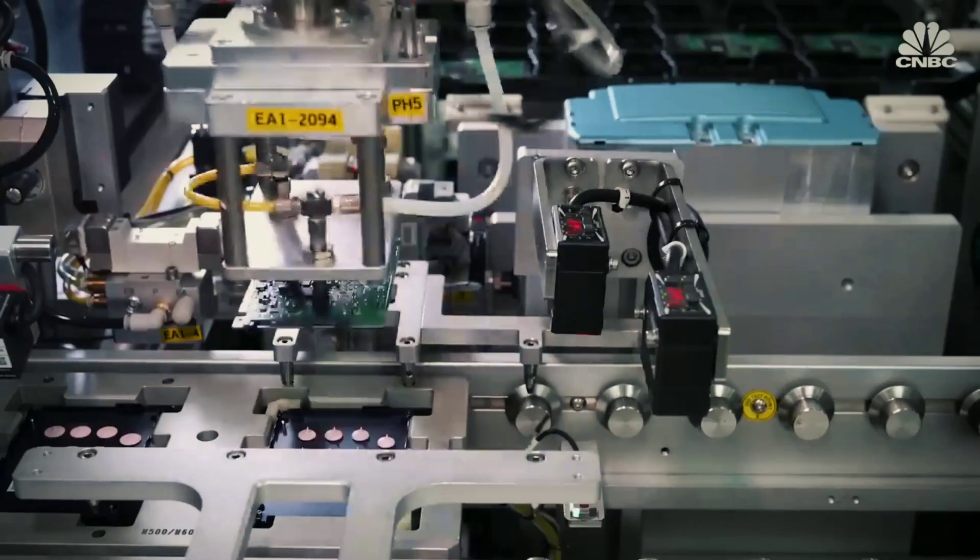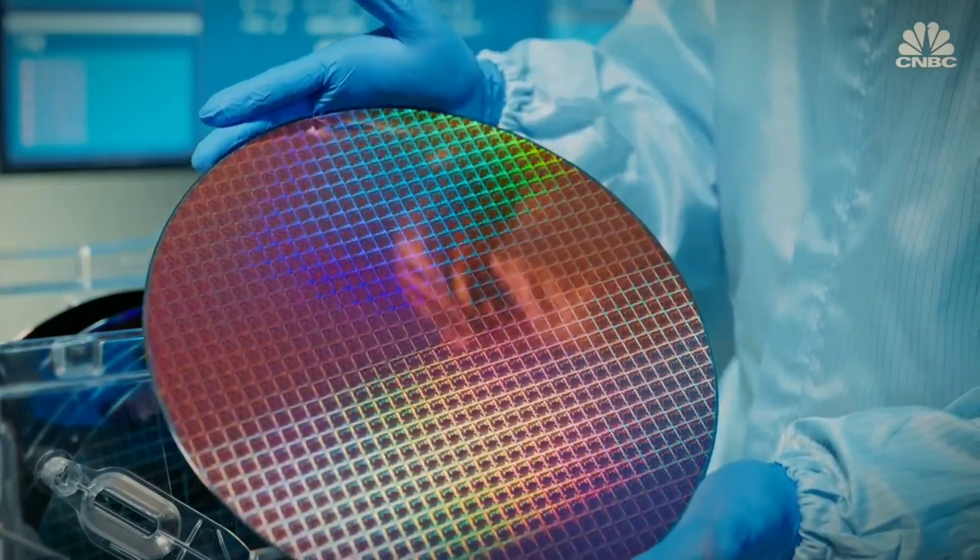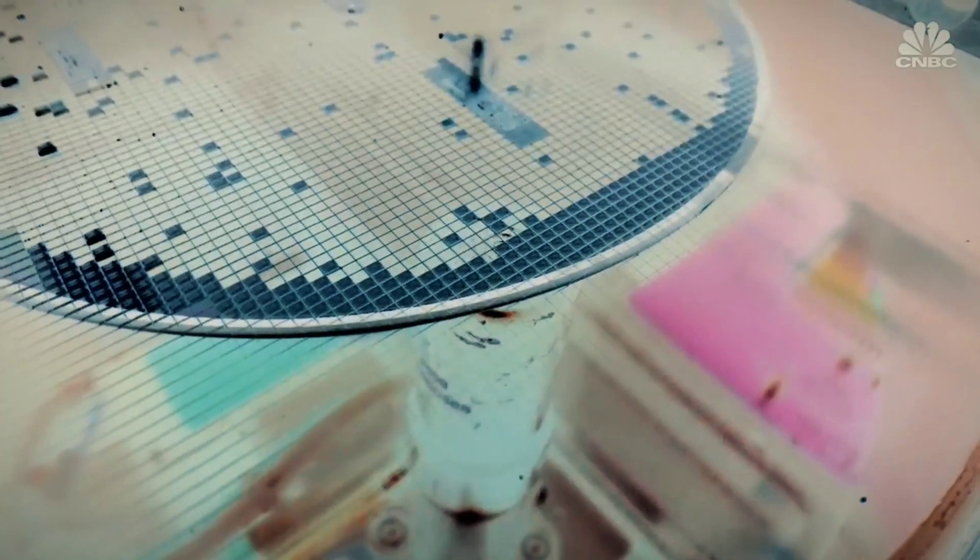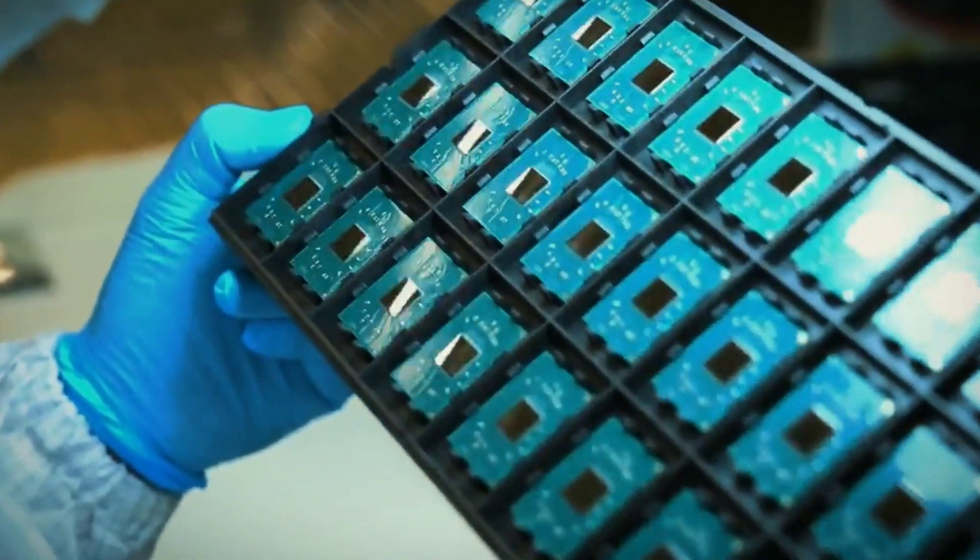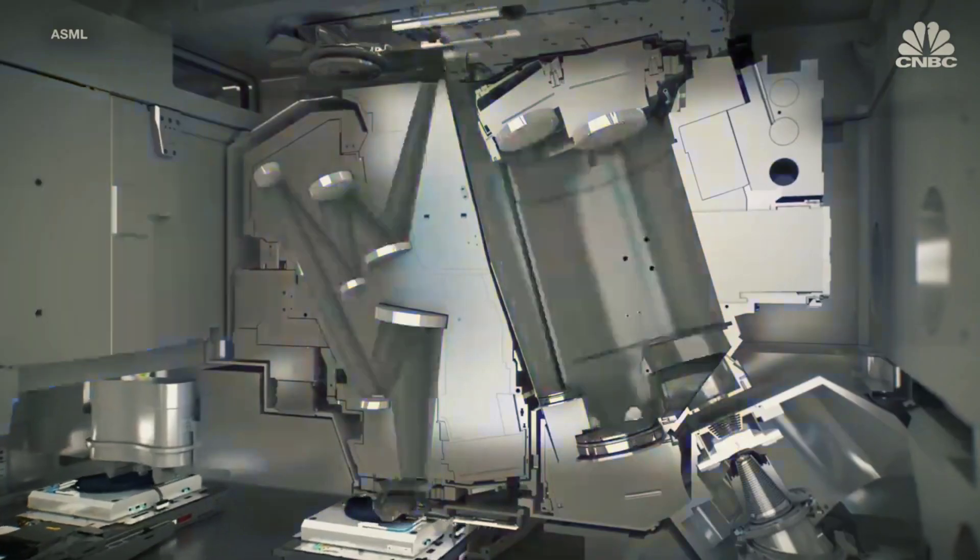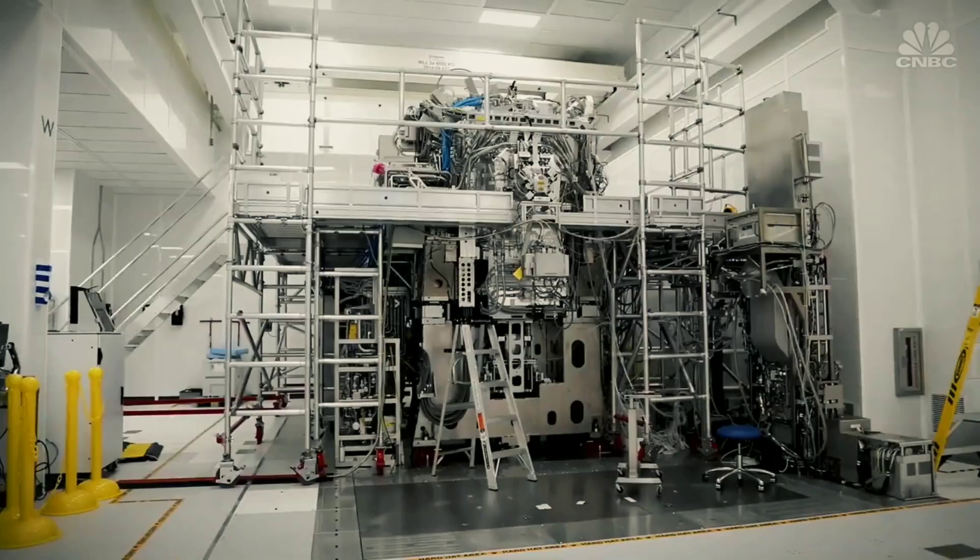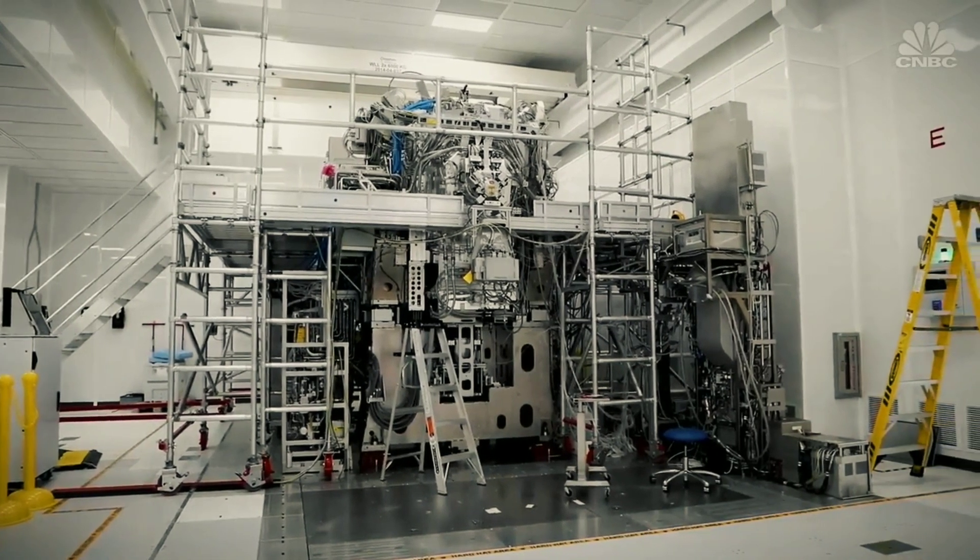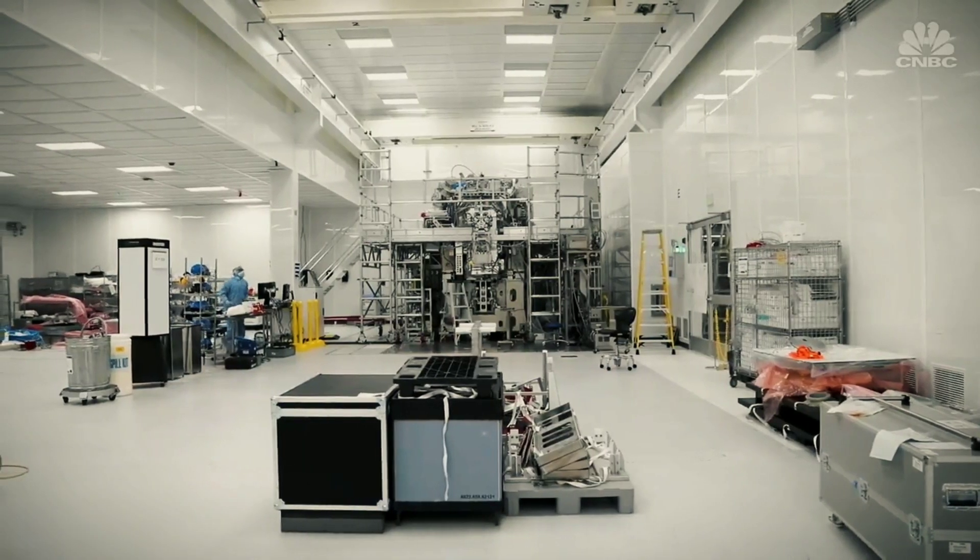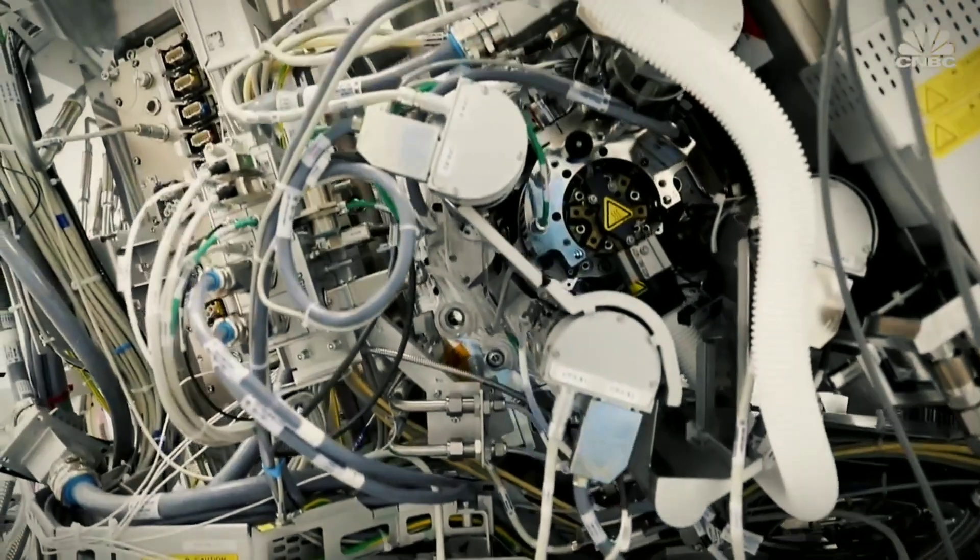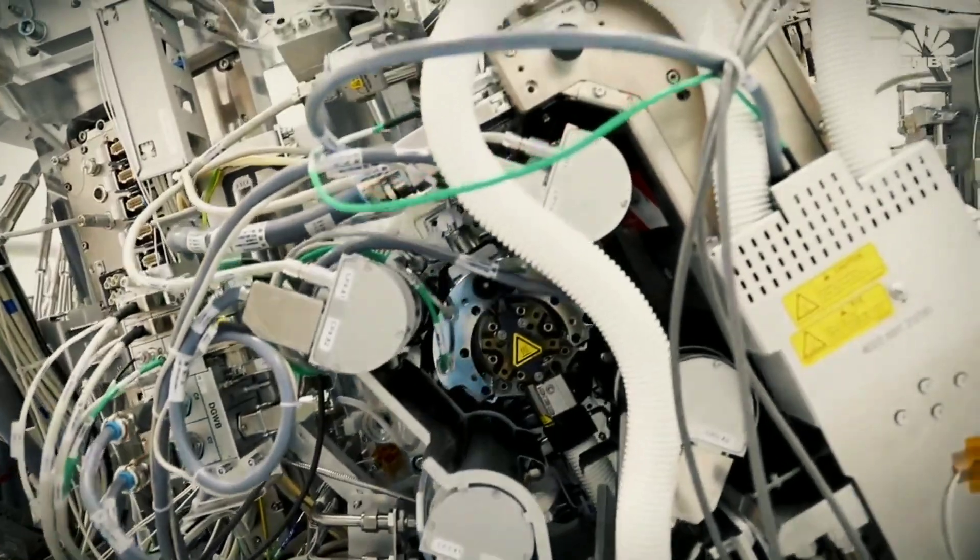In addition to restricting SMIC's access to raw materials and software necessary for chip production, the United States has outlawed the sale of EUV machines and other vital equipment to the company. Due to this, TSMC, who has been able to use EUV equipment to make more sophisticated chips, is now in a better position than SMIC.